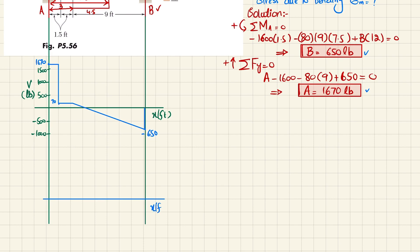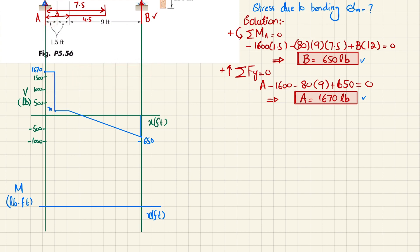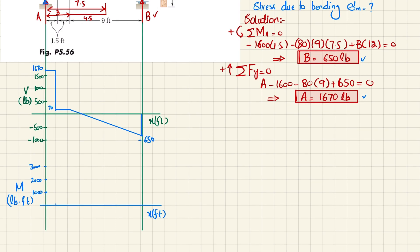Now we draw the bending moment diagram, with x in feet on the horizontal axis and moment in pound-feet on the vertical axis. The first area under the shear force diagram is a rectangle: 1670 times 1.5 feet equals 2505 pound-feet. Setting each division as 1000, we locate 2505 at x equals 1.5 feet. Since the shear force is constant (horizontal line) in this region, the bending moment is linear.